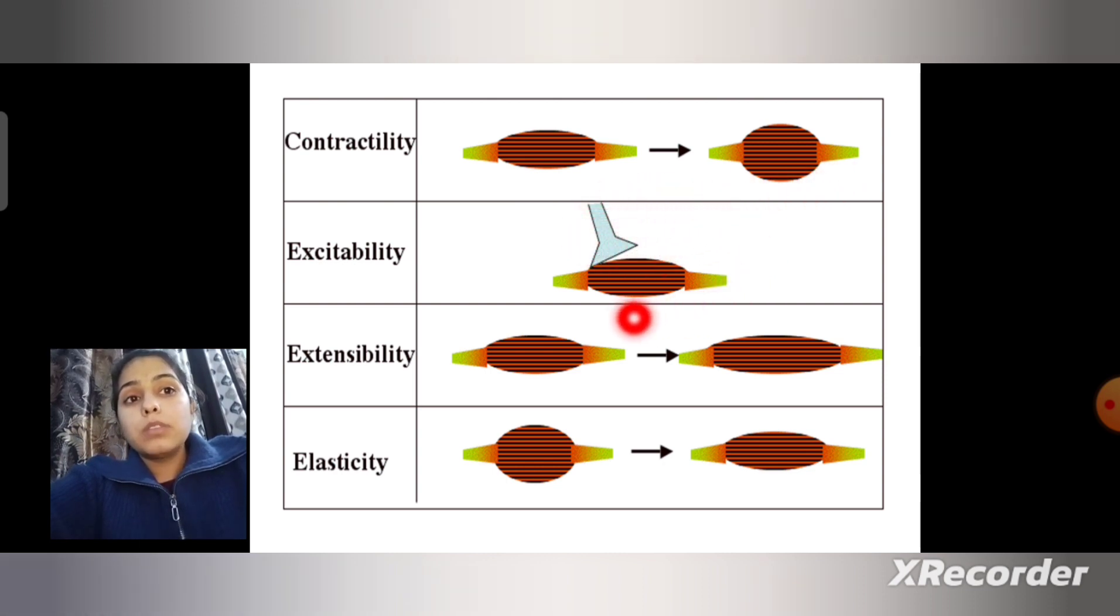Extensibility means during contraction muscle becomes shortened, and after relaxation muscle length increases. Elasticity is the property where after contraction, the muscle comes back to its original position. Thank you.